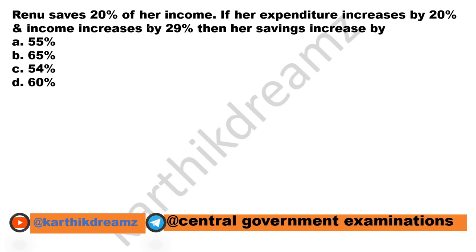In this question, Reino saves 20% of her income. Let us assume that Reino gets 100 rupees. If she saves 20% of her income, that is 20 rupees, and her expenditure is 80 rupees.